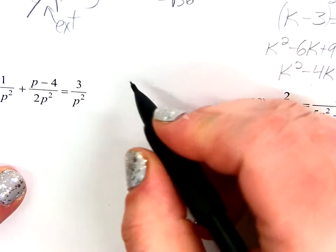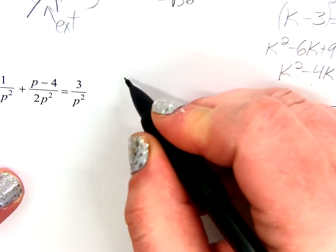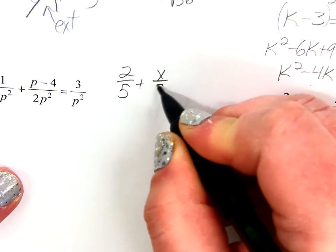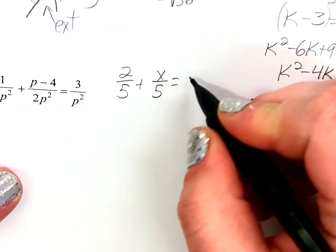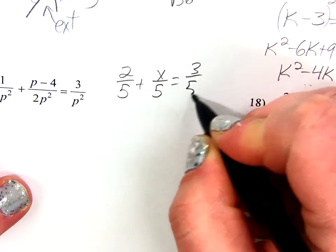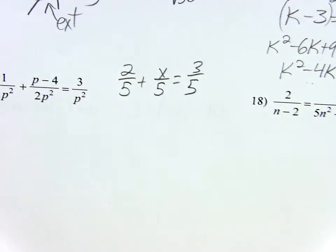Let me just do a simpler one. If I gave you an equation that was something like 2/5 plus x/5 equals 3/5, what does x have to be to make this true? 1, right? 2/5 plus 1/5 would get me 3/5, right? Do we all agree?